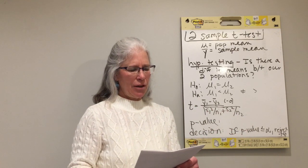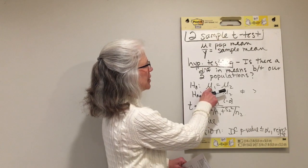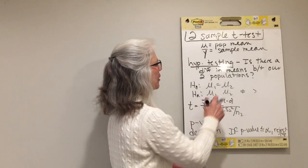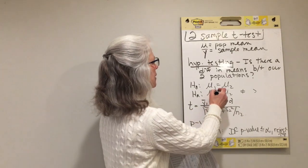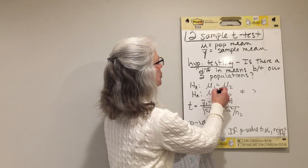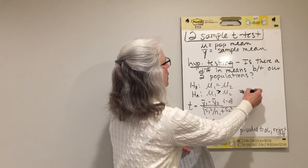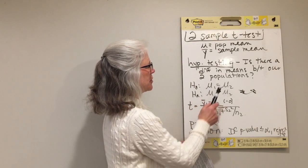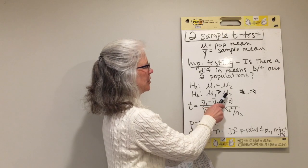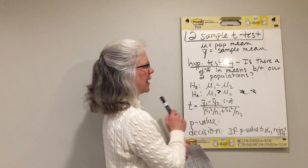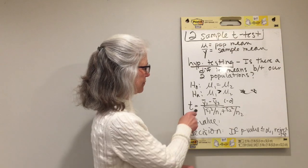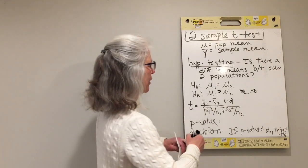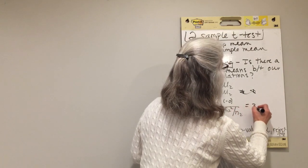Our null hypothesis is that the mean age of the non-survivors is equal to the mean age of the survivors. The alternate is that the non-survivors, the people who died, are older. So: no difference in average age between non-survivors and survivors under the null; the alternate is that non-survivors are older, on average, than those who lived. We compute the t-statistic by plugging in all the means, standard deviations, and sample sizes.